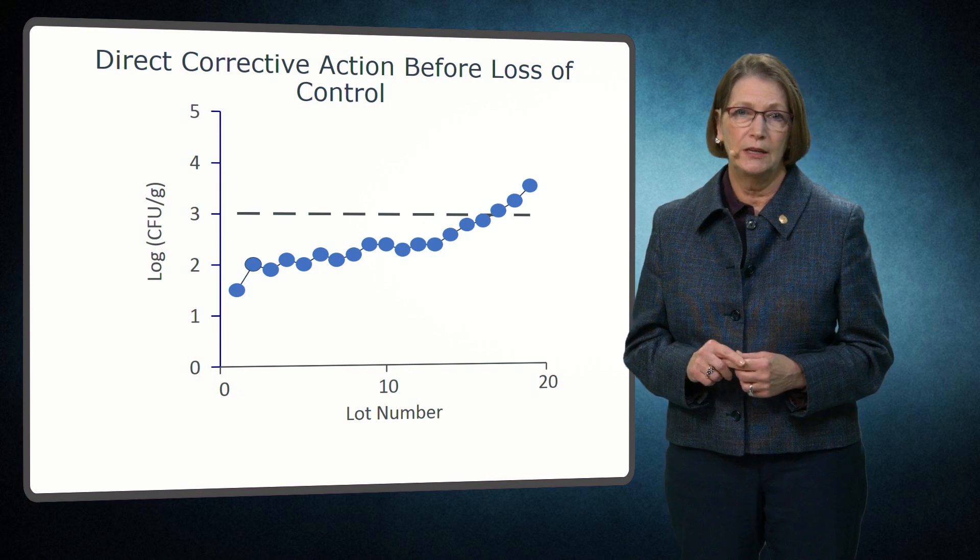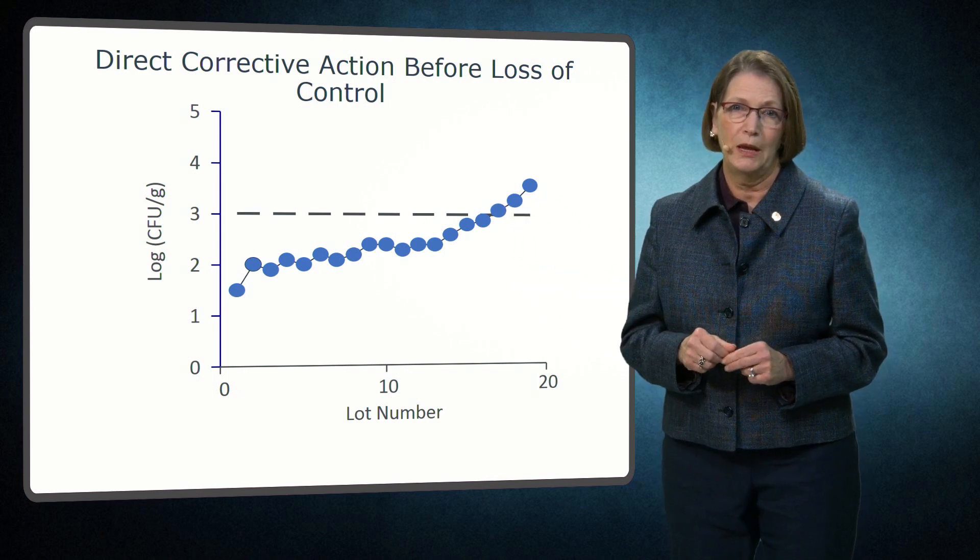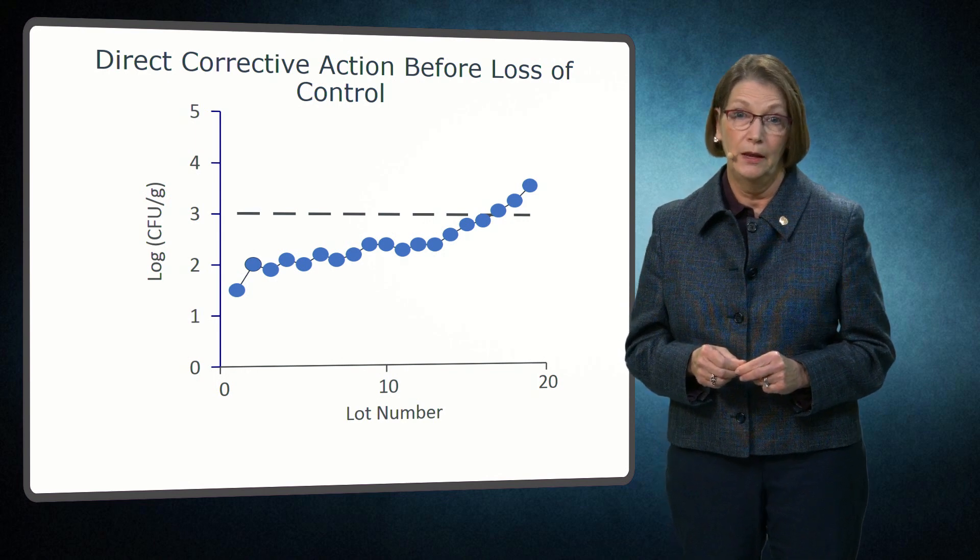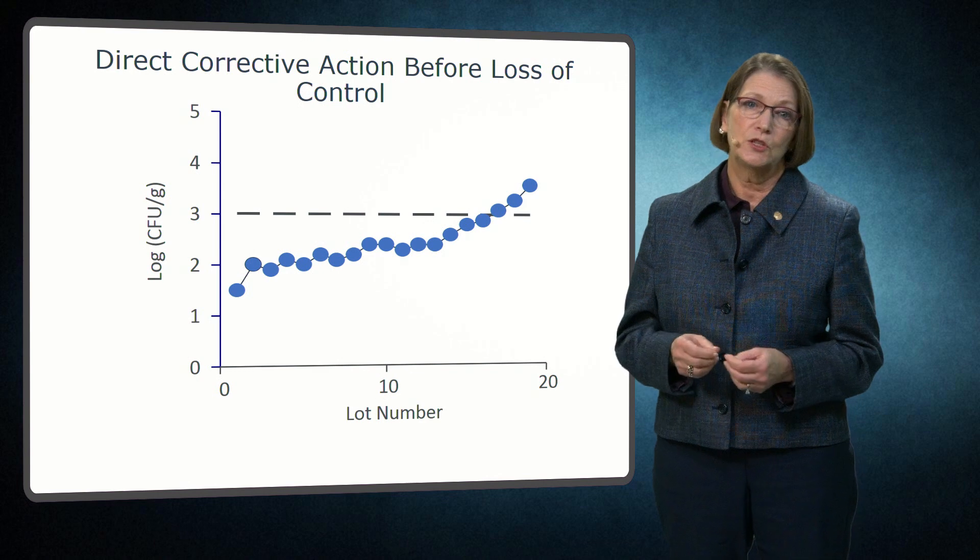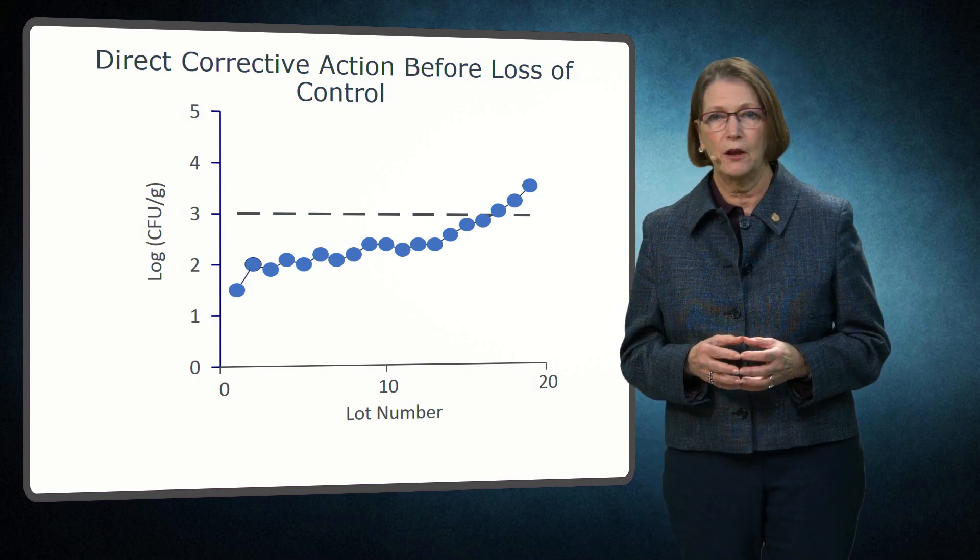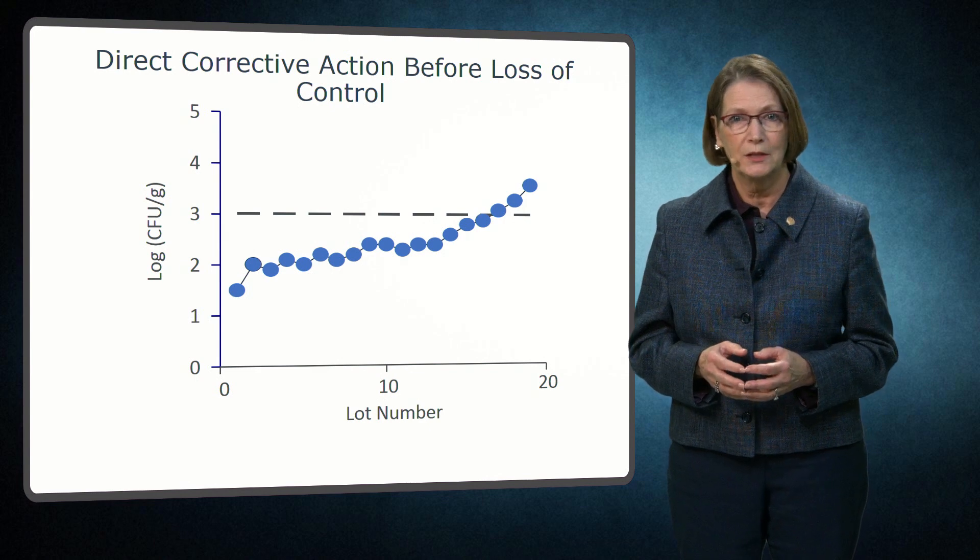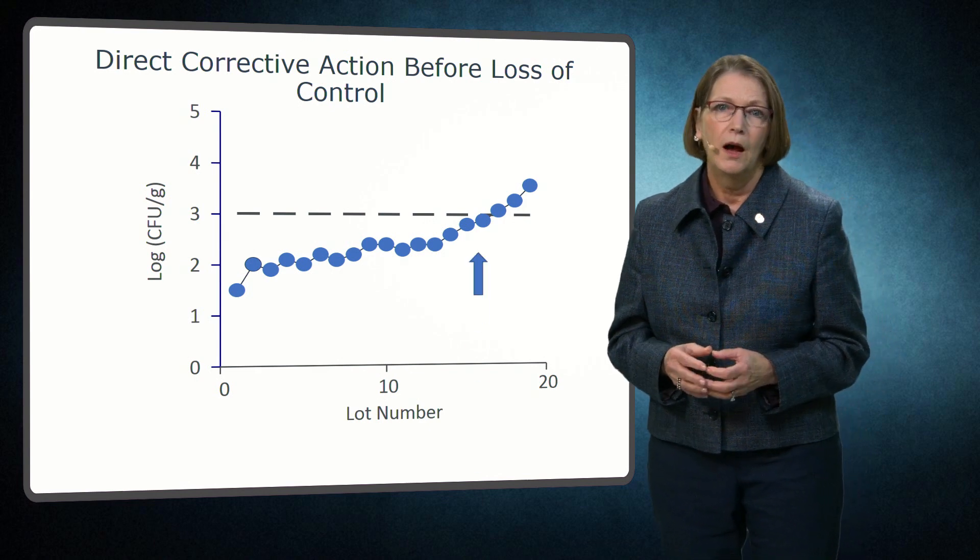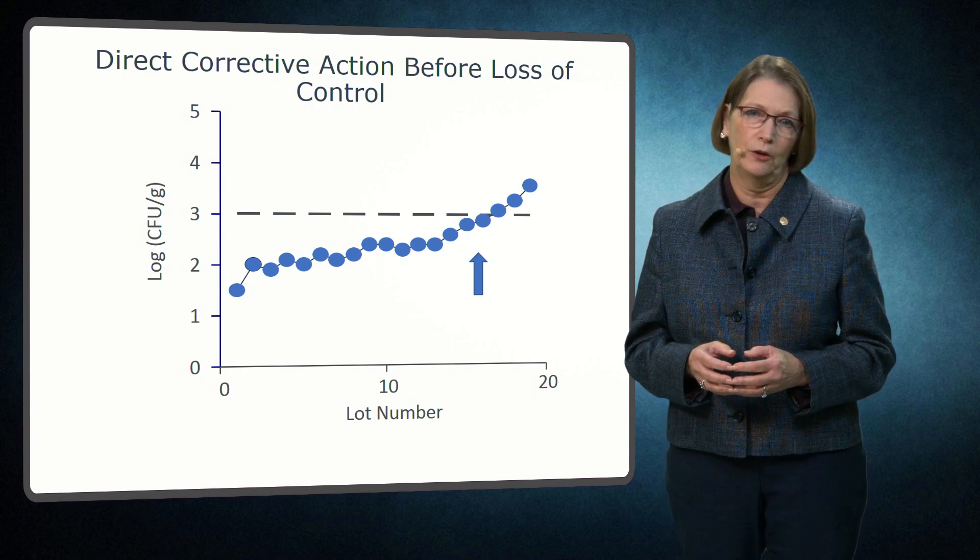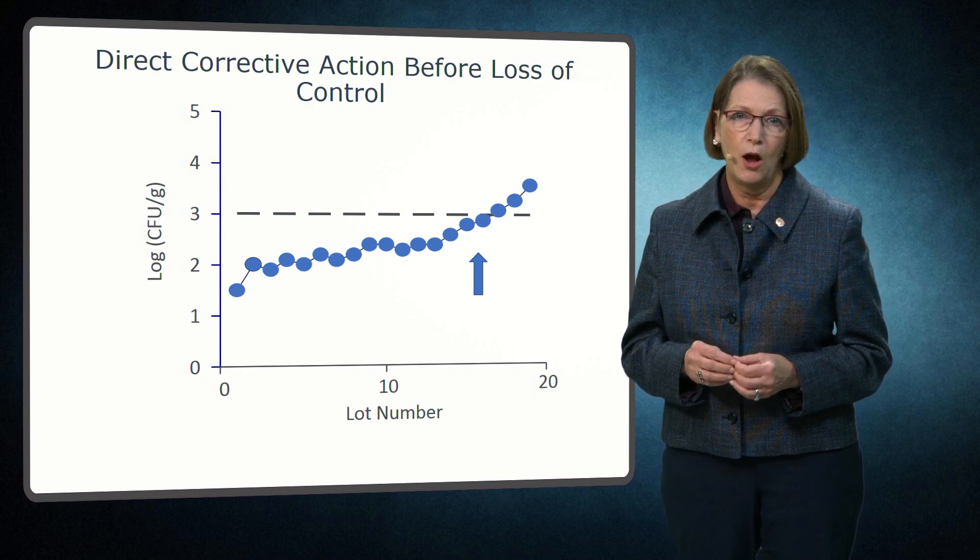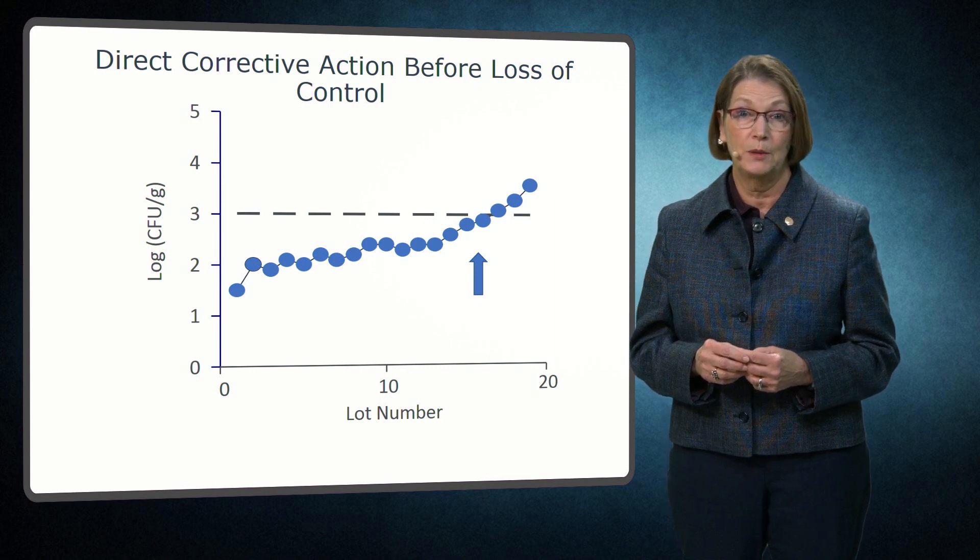This example illustrates an increasing trend. It may indicate growth of bacteria in the processing line and perhaps the need for sanitation of the lines. This chart illustrates the benefit of charting the information in a timely manner to avoid exceeding limits. A company may have initiated an investigation earlier to determine the cause of the fairly constant increase before unacceptable levels were observed.